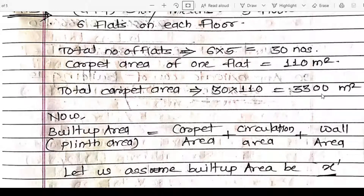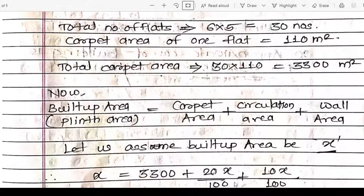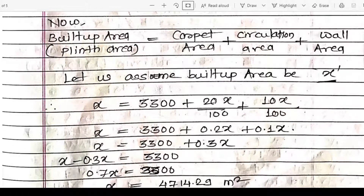The extra area for walls and circulation is given on a built-up area, not carpet area. The built-up area (plinth area) equals carpet area plus area for circulation plus area for walls. Let us assume the built-up area as x. So: x = 3,300 + 20% of x + 10% of x, which gives x = 3,300 + 0.2x + 0.1x.